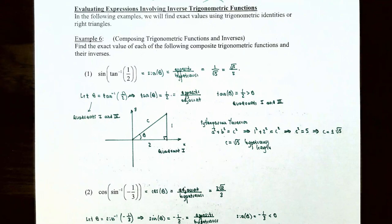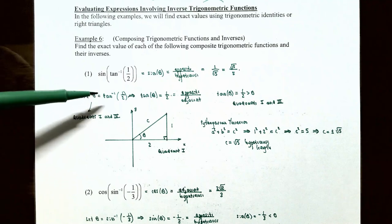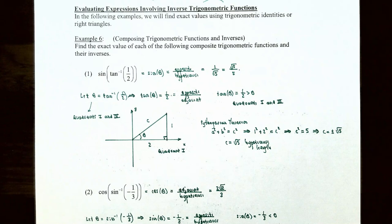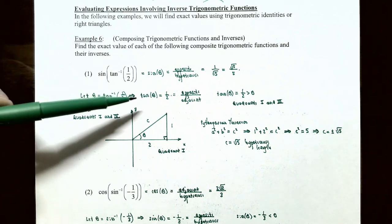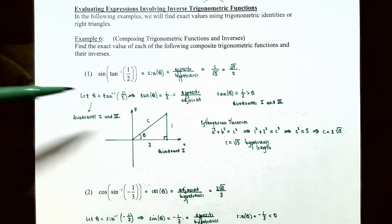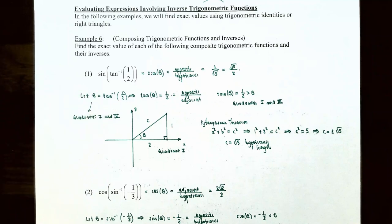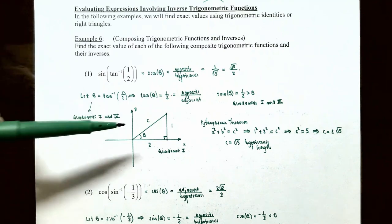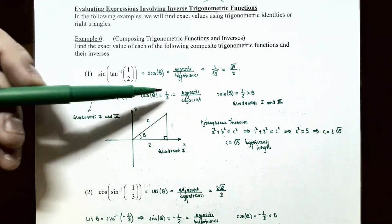Notice you have a composition of two different types of functions: a sine function and the inverse tangent function. We're going to call inverse tangent of one-half an angle theta, because the value is going to be an angle. So let theta equal inverse tangent of one-half, which means tangent of theta equals one-half. Using right triangles, tangent is opposite over adjacent, so opposite divided by adjacent will be the ratio one-half. Since we're using the inverse tangent function, theta must be between negative pi over two and pi over two radians, so we draw our triangle in quadrant one, with opposite side one and adjacent side two.